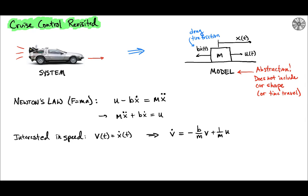Because we're interested in cruise control, which is a speed-related controller, we can write this equation in terms of velocity v, which is ẋ. This simplifies it from a second-order differential equation to a first-order differential equation in v.